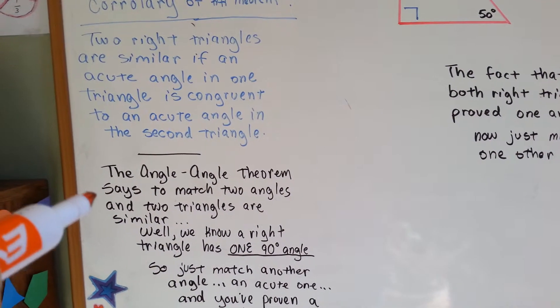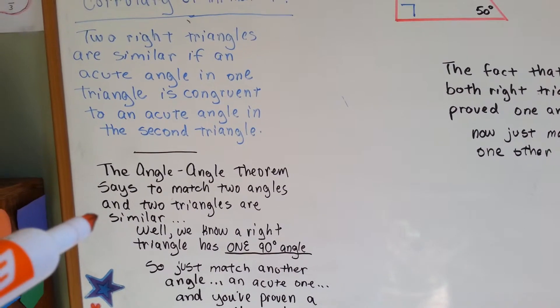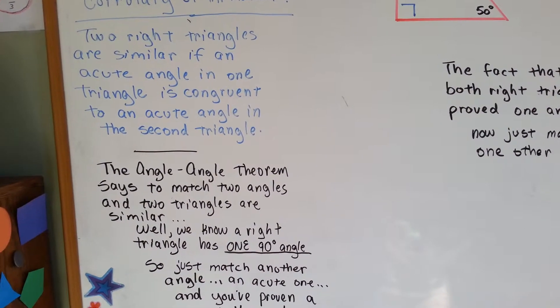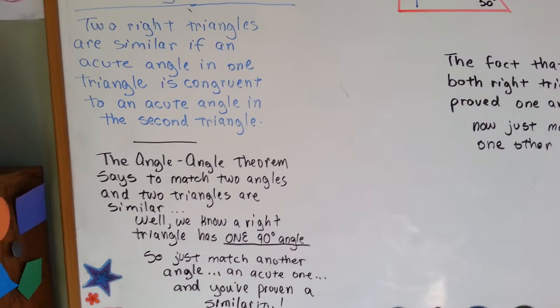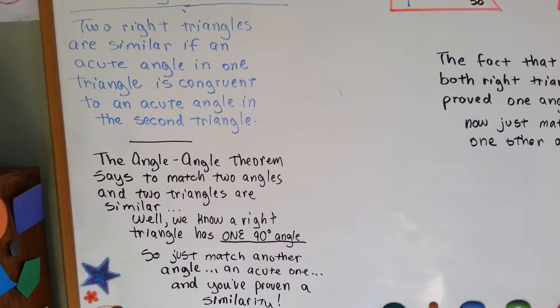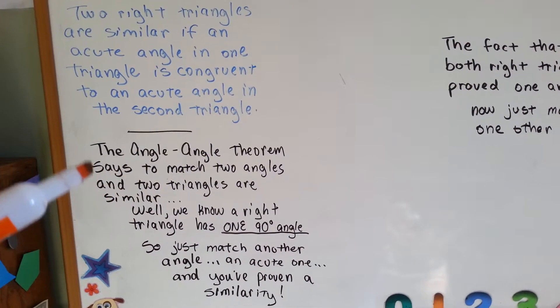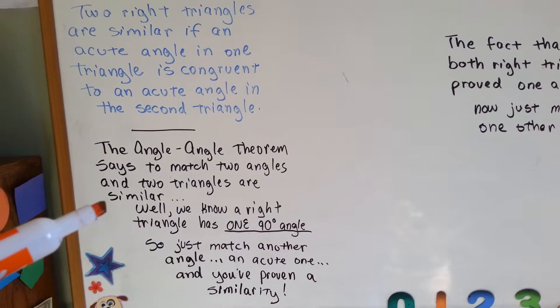So the angle-angle theorem says to match two angles, and you've proven that two triangles are similar. You don't need to match all three sides and all three angles. This theorem says, shortcut, match two angles, and they're similar.